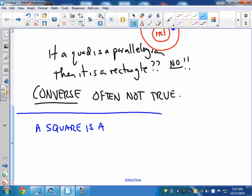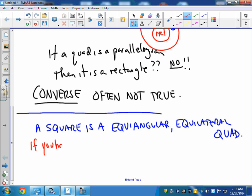So let's look at a simple definition: A square is an equiangular, equilateral quadrilateral.